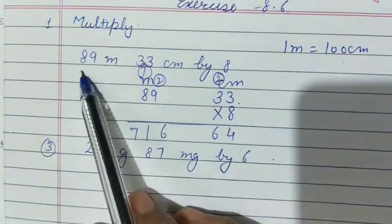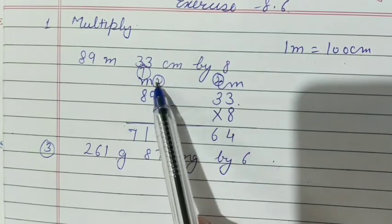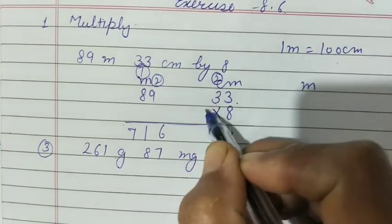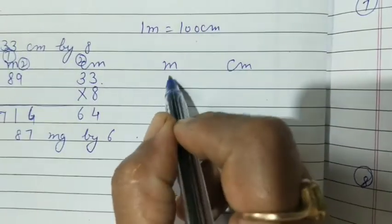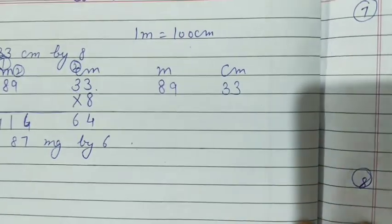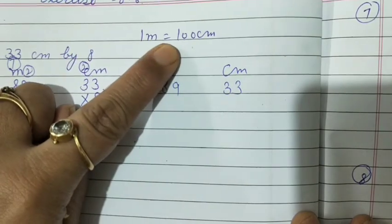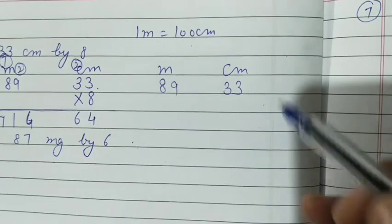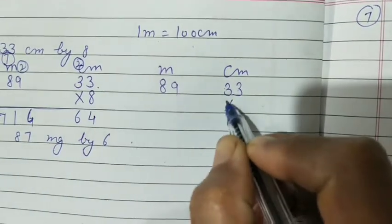Question A part 1 is multiply 89 meter 33 centimeter by 8. First you will frame the question, you will write meter centimeter. 89, 33. You know in 1 meter there are 100 centimeters, so two digits are compulsory. Here are already two digits, 33. So multiply by 8, simple multiplication.